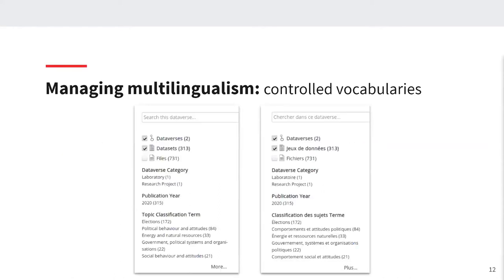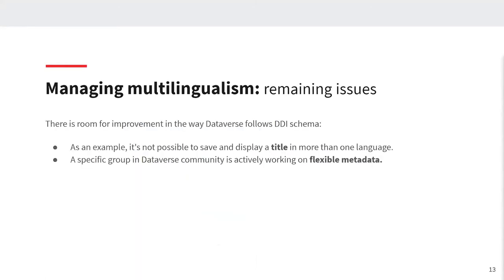Here's the result in our search engine — some translations are displayed as intended. For example, you can see in the filters, in the topic classification terms which use a controlled vocabulary, that everything is translated in French and English. However, there is still room for improvement in the way Dataverse follows the DDI schema. Dataverse cannot save metadata in multiple languages; for example, it's not possible to save and display a title in more than one language. But there is a specific group in the Dataverse community actively working on having more flexible metadata.